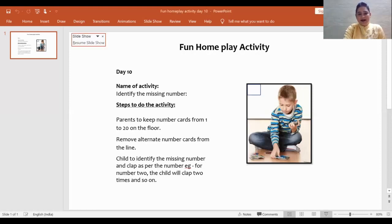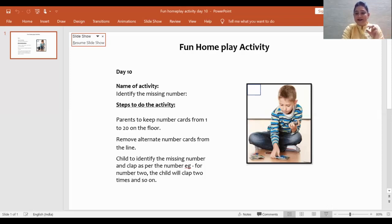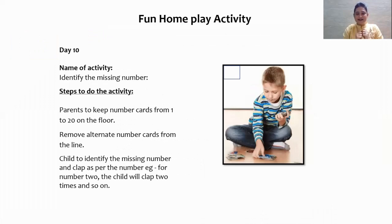And now it's time for home play activity. Teacher is going to tell you what home play we are going to do today. The activity is to identify the missing numbers. Your parents are going to make number cards from 1 to 20 and arrange them on the floor. Then your mama or papa can pick up the alternate card, and you have to identify the missing number. Once you identify the number, just pick it up and clap that many times. Enjoy this activity with your parents at home.